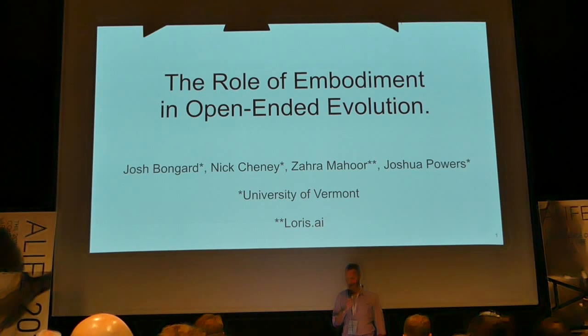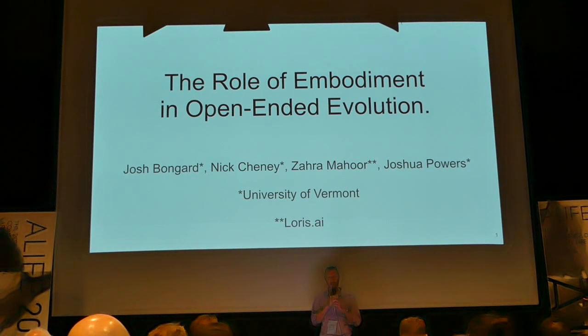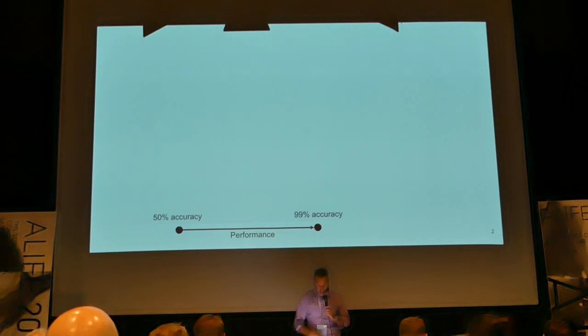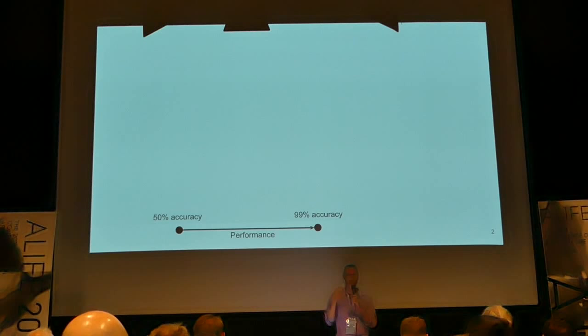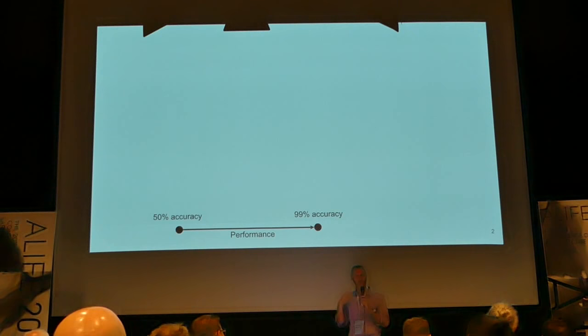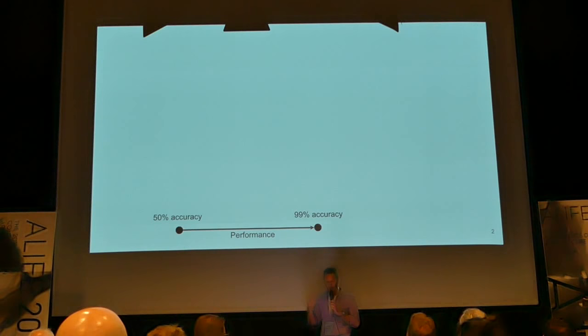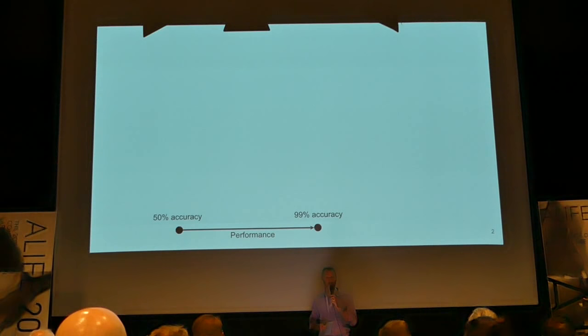Not surprisingly, I'm going to talk about the role of embodiment in open-ended evolution. This has already been mentioned several times this morning, and I hope I have something new to say on this topic. So just before I introduce some of our work in this area, I wanted to spend the first part of my presentation taking a step back and thinking about where AI has been and where it's going and what the relationship is to open-ended evolution. As a community, we've been working on this question of performance for 30, 40, maybe 50 years, depending on how you think about it.